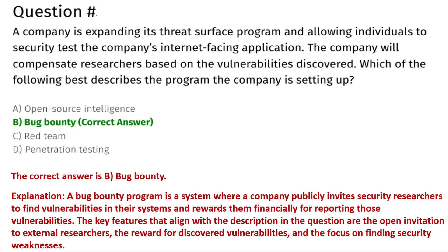The next question: a company is expanding its threat surface program and allowing individuals to security test the company's internet-facing application. The company will compensate researchers based on the vulnerabilities discovered. Which of the following best describes the program? Option A: open source intelligence. Option B: bug bounty. Option C: red team. Option D: penetration testing.